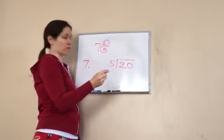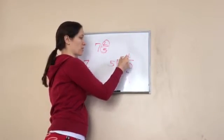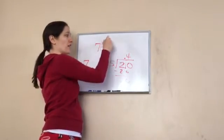Will 5 go into 20? Yep, 4 times. 5 times 4 is 20. That ends it. Bring my decimal up. 0.4. So 2 fifths is what?